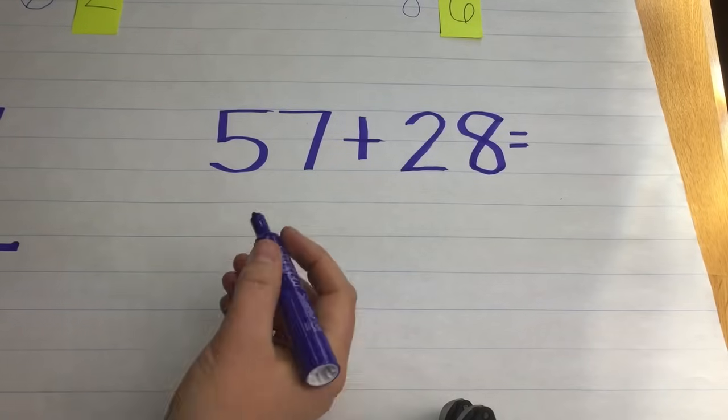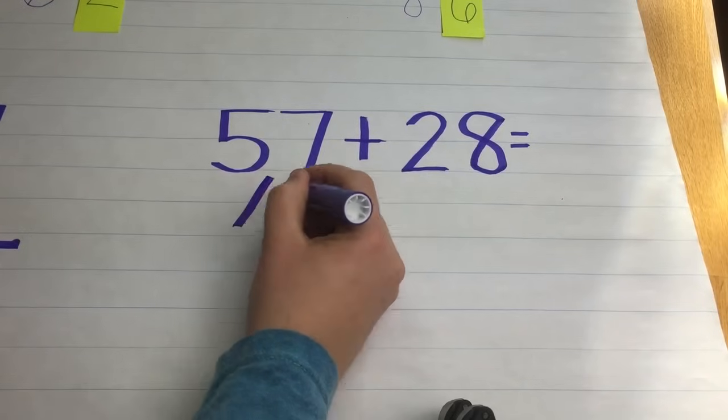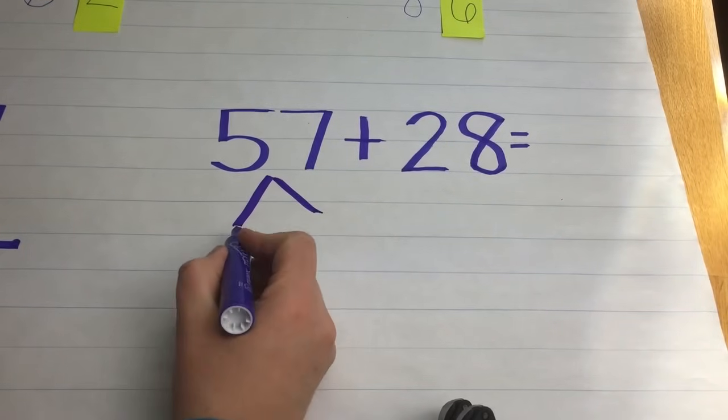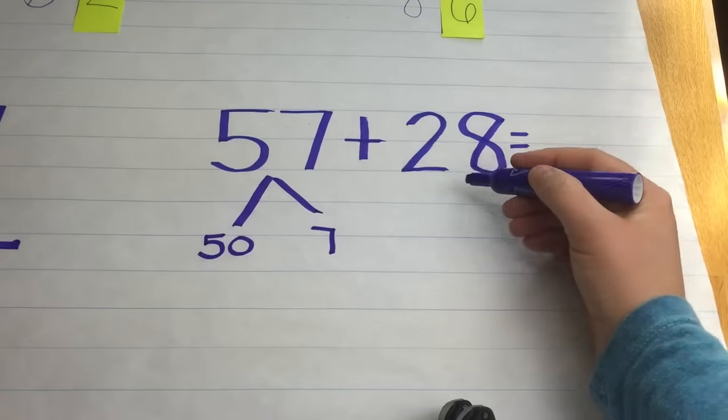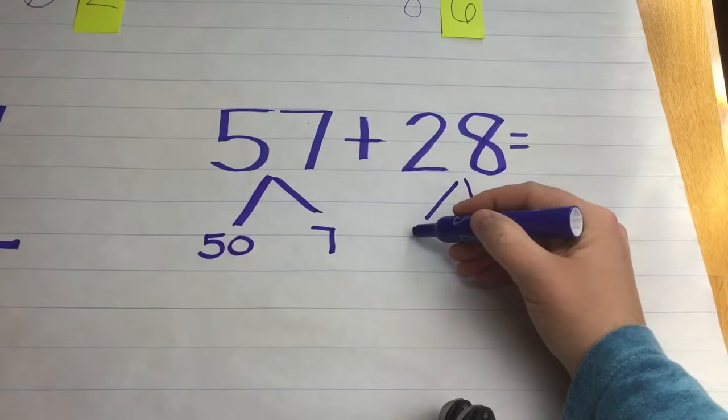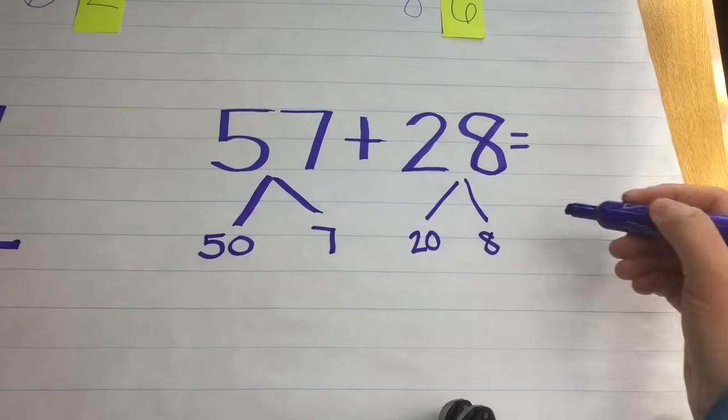So they will tell me, if you've gone through your place value unit, that you would take 57 is 50 and 7, and 28 is 20 and 8.